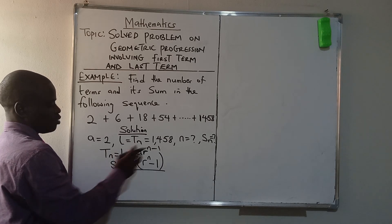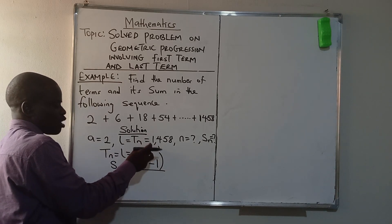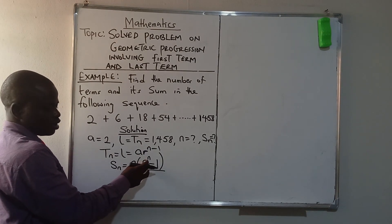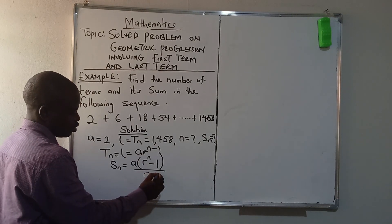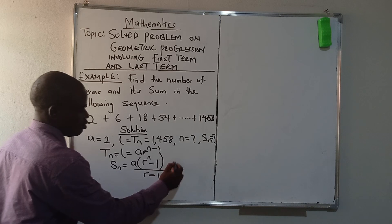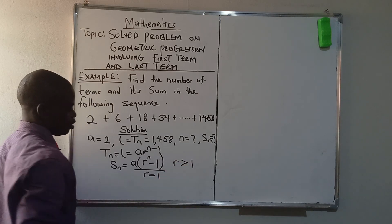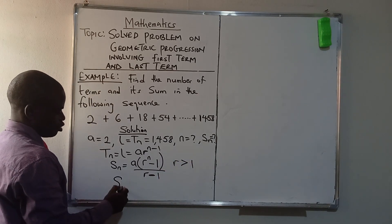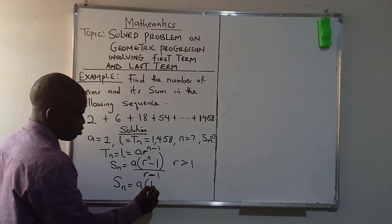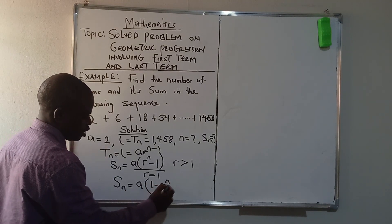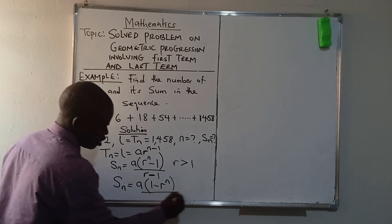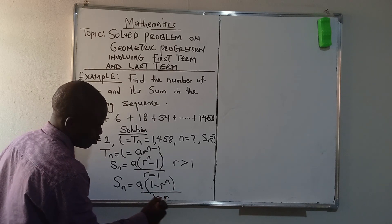When we are looking for the last term, N minus 1 is raised to power of this R. When we are looking for the sum, minus 1 is down over R minus 1. That's when R, the common ratio, is greater than 1. That formula for sum is also written as A·(1 - R^N)/(1 - R) when R is less than 1.